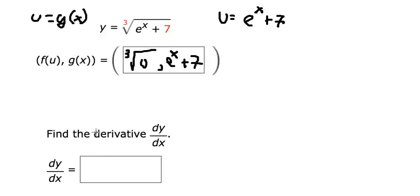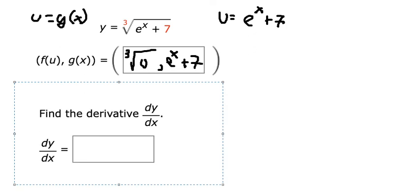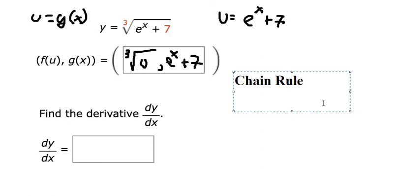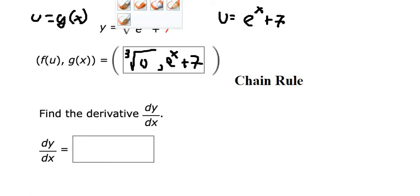Question number two, we need to find first the differential of this one. So they want to use about the chain rule in here. That means we need to do first the differential of this one, and we know that this one should be about one over three multiplied by one over u to the power of two over three.